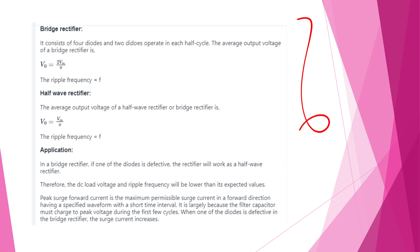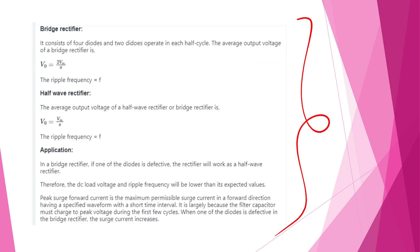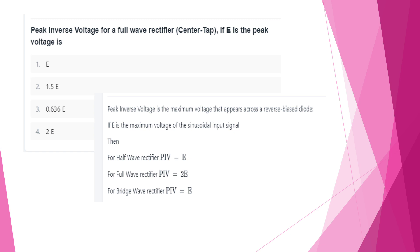The 21st question: peak inverse voltage for a full-wave rectifier. If E is the peak voltage, the PIV = 2E. Option 4.